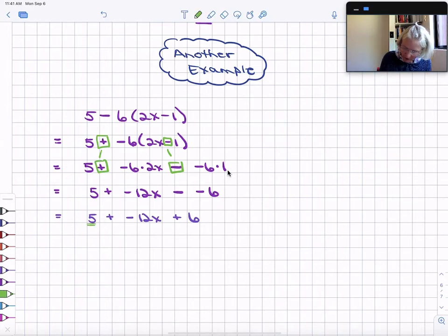Finally, let's do our addition. We've got 5 plus 6. Since everything's in addition, we can do things in any order. And we're left with negative 12x plus 11.